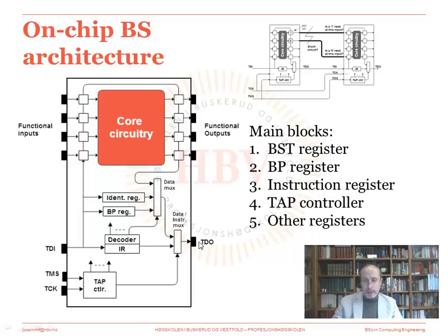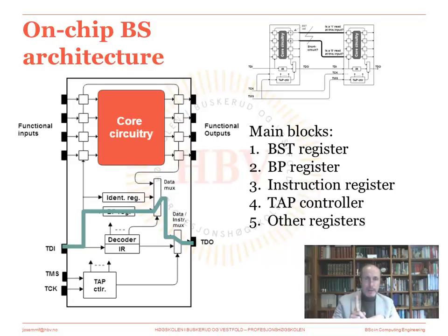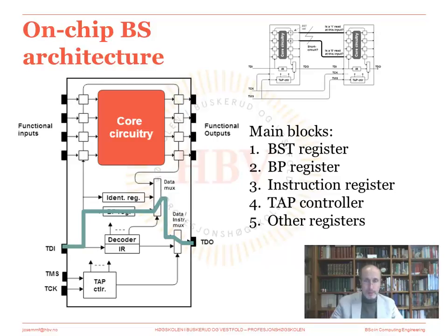We can also connect another test data register if we switch the so-called data multiplexer as shown now. In the case of the bypass register, this is a one-cell register — a one-bit test register — and this offers a shortcut to go through certain devices where we do not wish to do anything. Some devices can have more than 1,000 boundary scan cells in their boundary scan register, so being able to bypass those devices when we are not interested in their test logic is an important issue.